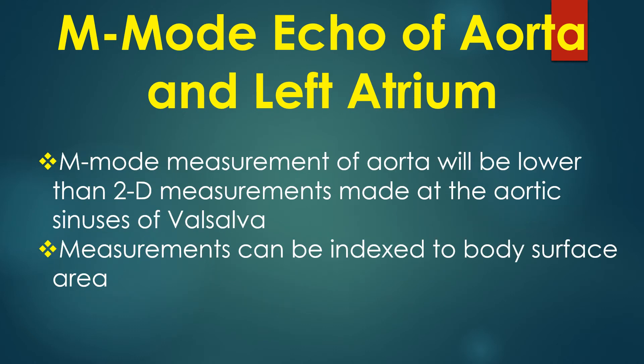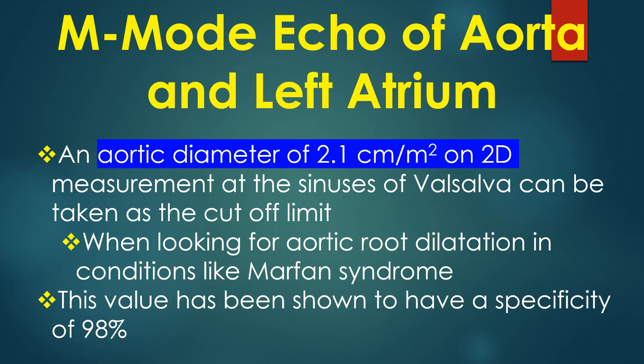M-mode measurement of the aorta will be lower than two-dimensional echocardiography measurements made at the aortic sinuses of Valsalva. The measurement can be indexed to body surface area. An aortic diameter of 2.1 cm per m² on 2D measurement at the sinuses of Valsalva can be taken as the cut-off limit when looking for aortic root dilatation in conditions like Marfan syndrome. This value has been shown to have a specificity of 98%.